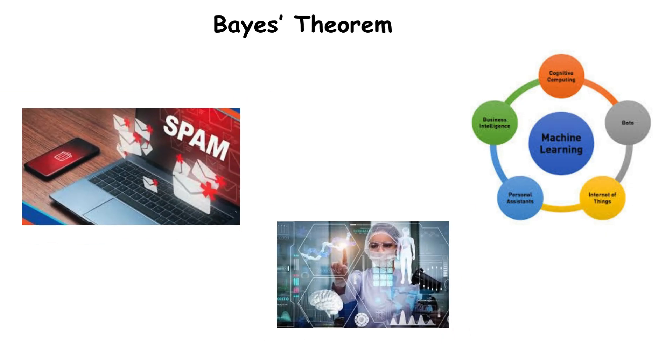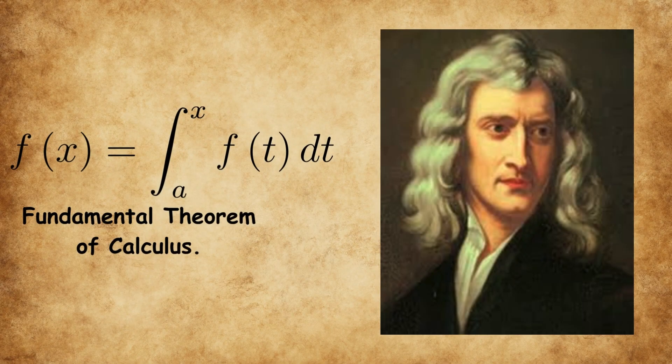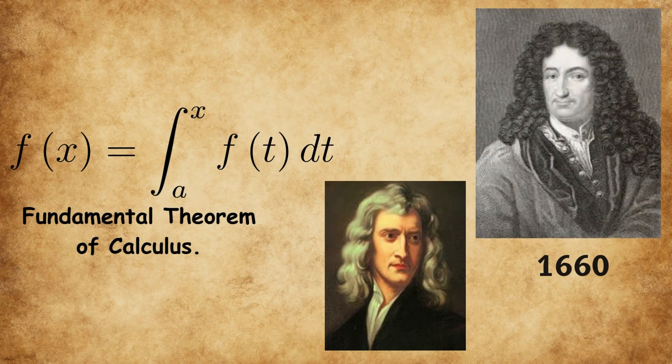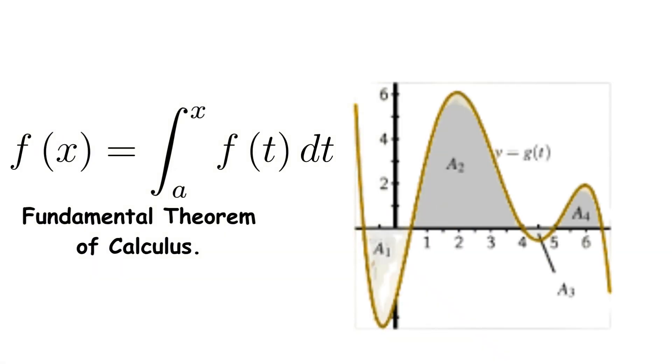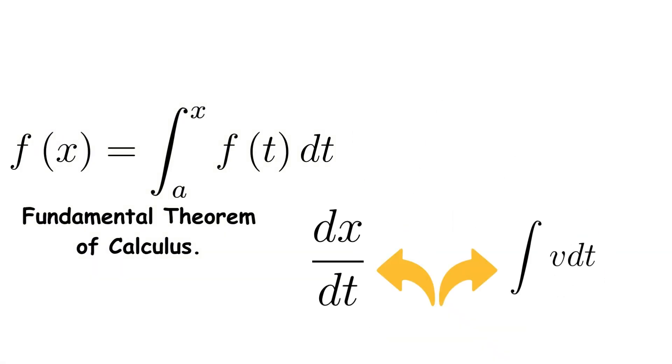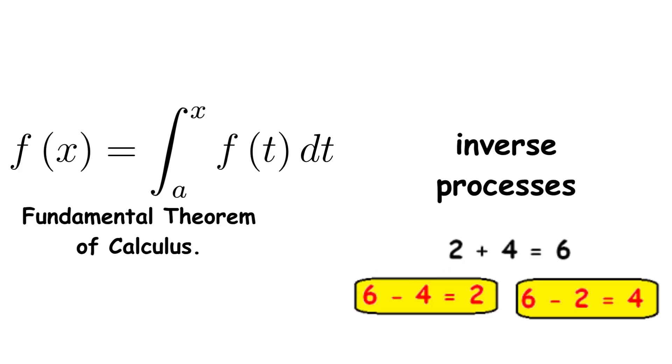Fundamental Theorem of Calculus. Developed independently by Isaac Newton and Gottfried Leibniz in the 1660s, this theorem revolutionized mathematics by connecting two seemingly opposite operations, differentiation and integration. The theorem states that differentiation and integration are inverse processes, meaning one undoes the other.